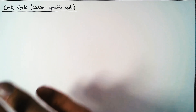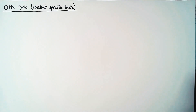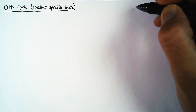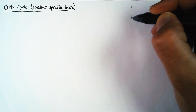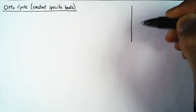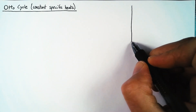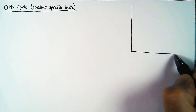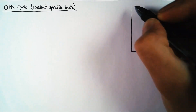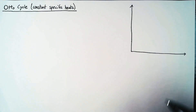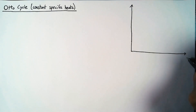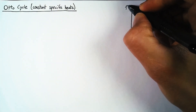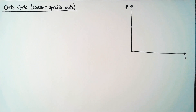The Otto cycle is meant to simulate a piston. So before we begin, let's look at what a piston cycle looks like on a PV diagram.